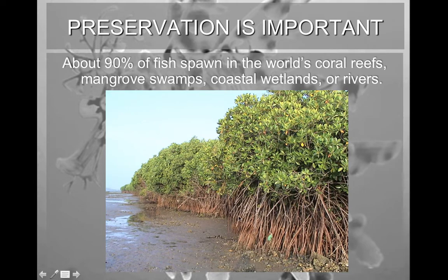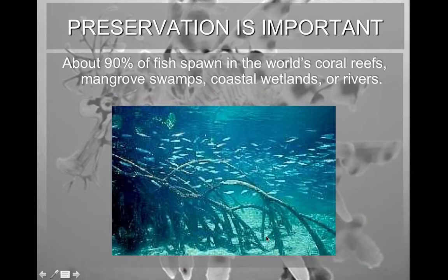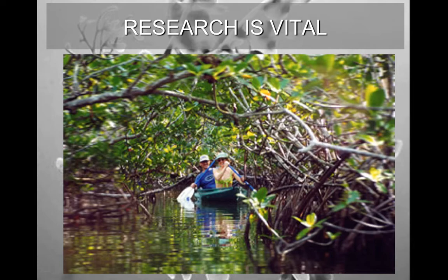Mangrove swamps have several different types of habitat depending on the level of the tide. At low tide, the area is entirely exposed and can have small mammals hiding in the mangrove forests. As the water rises, we end up with different biodiversity. This means we need huge research efforts at both low and high tides. Research is vital in these regions so we can help maintain biodiversity — this is actually research by kayak, which is a neat thing about this type of science.